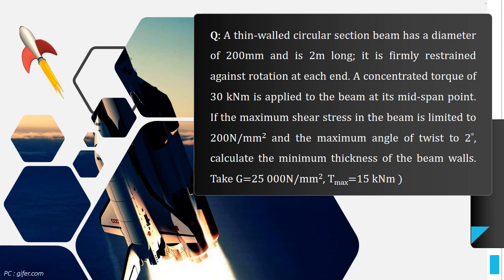If the maximum shear stress in the beam is limited to 200 N/mm² and the maximum angle of twist to 2 degree, calculate the minimum thickness of the beam walls. Take G is equal to 25,000 N/mm² and T_max is equal to 15 kNm.